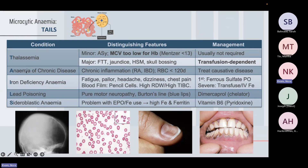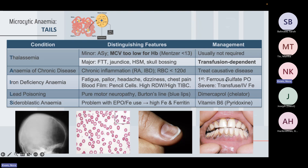Another way hemoglobin can be defective is in chronic disease and iron deficiency. In chronic disease, iron levels are low because of complex mechanisms. Iron deficiency can also occur because you're not consuming enough iron or not absorbing it — for example with Crohn's disease. In iron deficiency anemia, first-line treatment is oral ferrous sulfate. Importantly, this causes black stools and GI upset. Severe iron deficiency anemia is treated with IV iron or blood transfusion. If the patient has malabsorption, oral ferrous sulfate won't be sufficient, so IV iron is more beneficial.